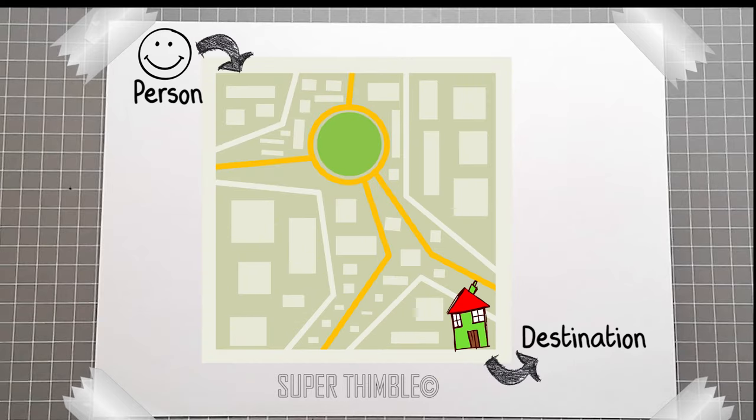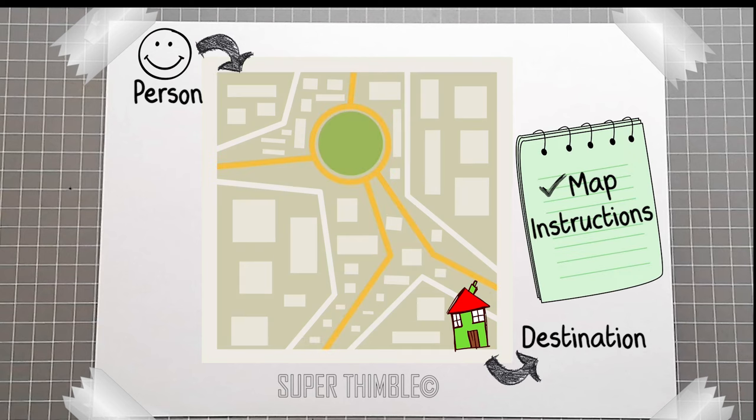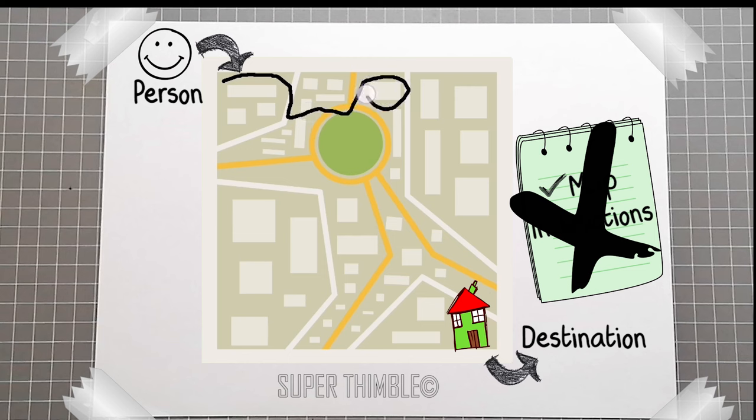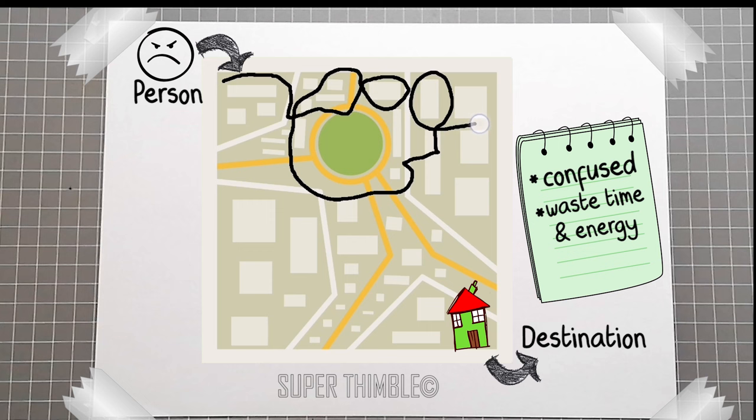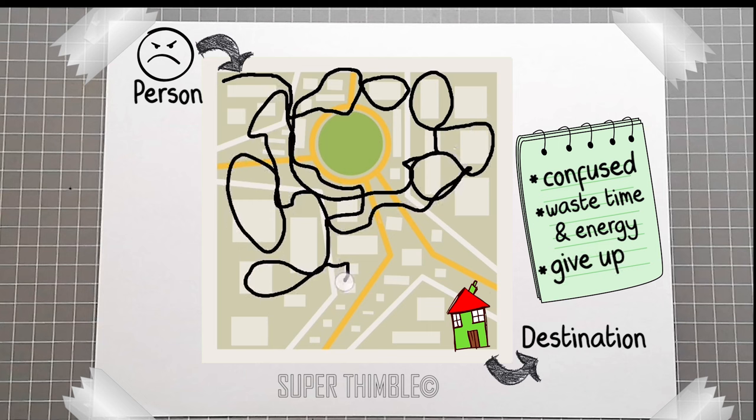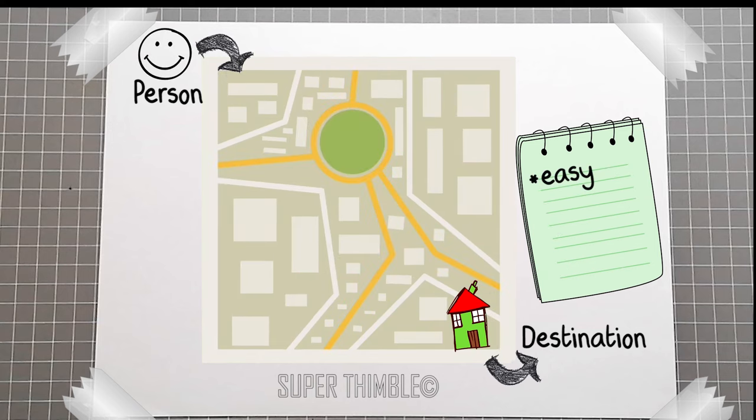What if the person does not have those instructions and map? He gets confused, wastes their time and energy, ultimately might not reach the destination and give up. And if that person has a map for the destination, it gets easy for him, saves time and energy.